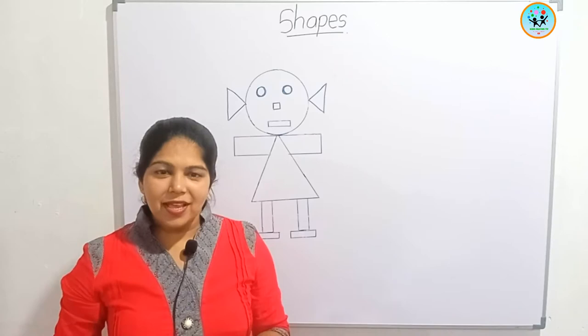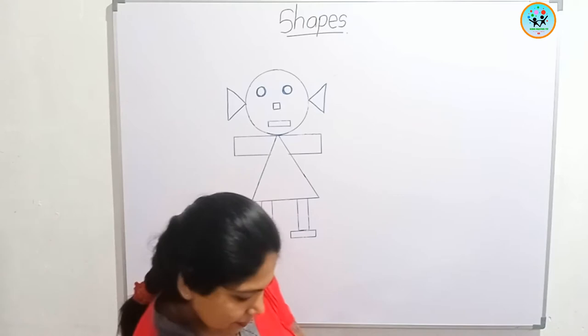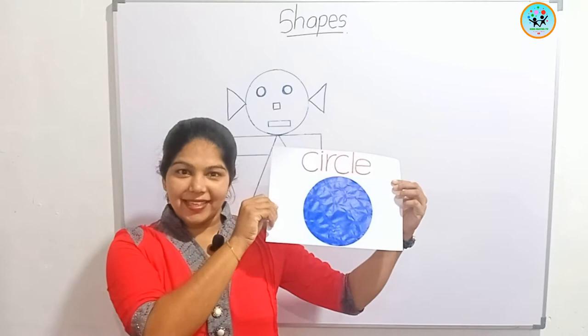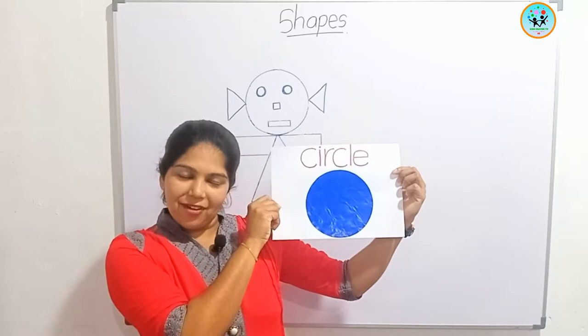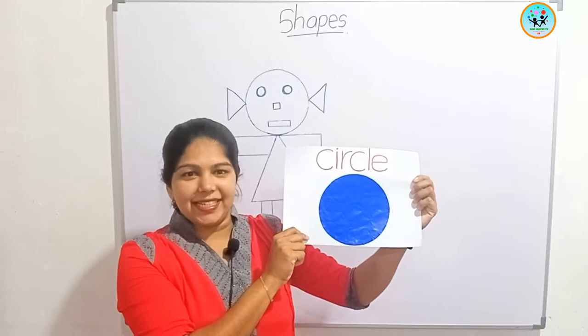Now I am going to show some shapes. There are different types of shapes around us. Look at this shape — it's called a circle. What is this? Circle.